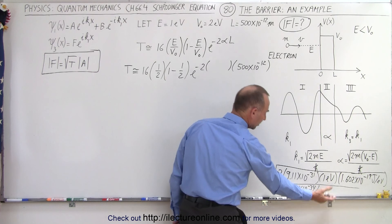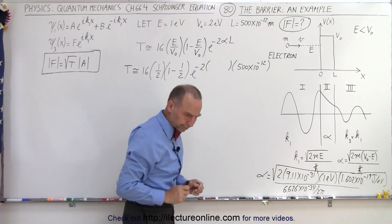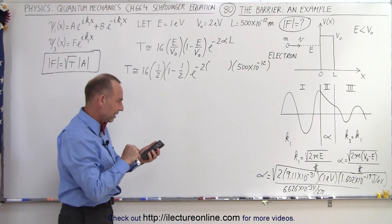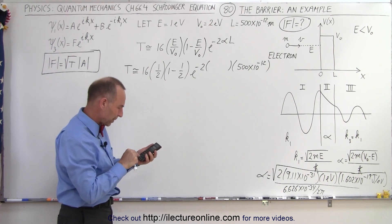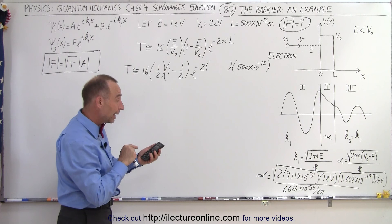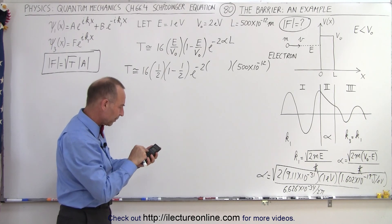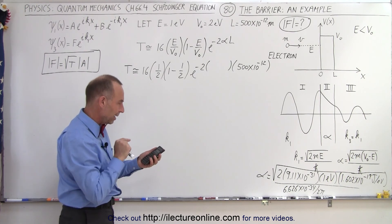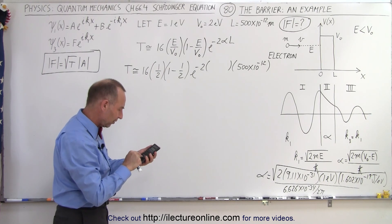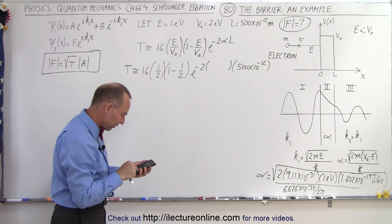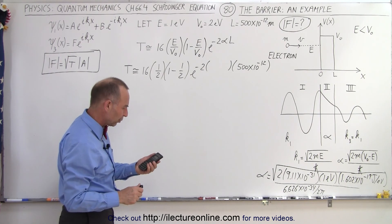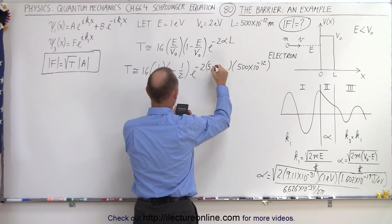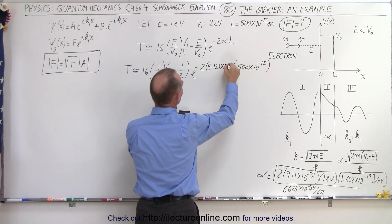When we divide by 2 pi in the denominator, that comes to the numerator. Using a calculator: 2 times 9.11e-31, take the square root, multiply by 2 pi, then divide by Planck's constant 6.626e-34. This gives us approximately 5.123 times 10 to the ninth.